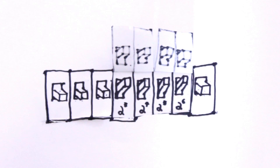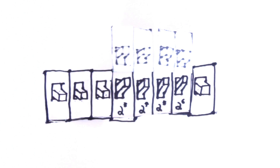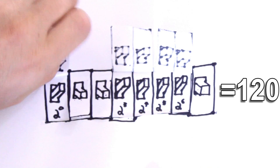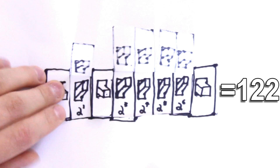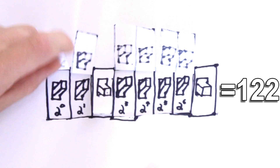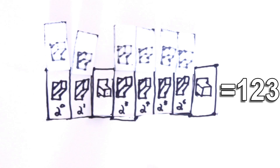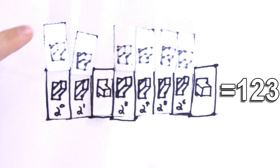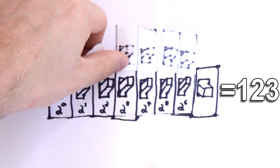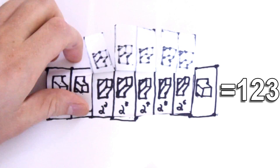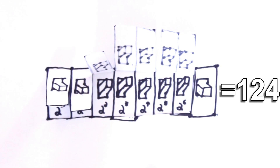The current state of the switches is 2³ + 2⁴ + 2⁵ + 2⁶ = 120. So let's add one. Click. 121. Let's add one more — two 'two to the power of zeros' make a 'two to the power of one'. Click click. 122. And add one. Click. 123. And add one — two of these make one of those, and two of those make one of those, just like carrying remainders in addition. Click click click. 124.